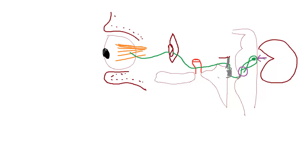Once the sixth nerve exits the pons, the area between the pons and the clivus — as it climbs the clivus and crosses the edge of the petrous temporal bone entering the cavernous sinus — is very susceptible to herniation or increased intracranial pressure. If ICP is elevated, the brain stem gets displaced downwards, stretching the sixth nerve over the petrous temporal bone edge. This is why patients with pseudotumor cerebri develop bilateral sixth nerve palsies, often called a false localizing sign.